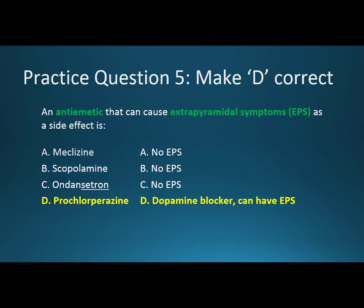Practice question 5: An antiemetic that causes extrapyramidal symptoms, or EPS, as a side effect. The correct answer is D, prochlorperazine. Meclizine, scopolamine, and ondanzetron are incorrect because they don't have extrapyramidal side effects. Meclizine is an antihistamine so you can get drowsiness, and it has anticholinergic properties so we can see dry mouth or constipation. Scopolamine is exclusively anticholinergic, so we also see drying side effects. Ondanzetron blocks serotonin, so side effects include headache or diarrhea. Prochlorperazine is a dopamine blocker, so its side effects are similar to antipsychotics, including extrapyramidal symptoms.